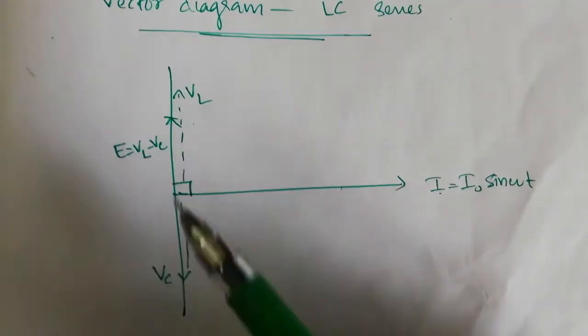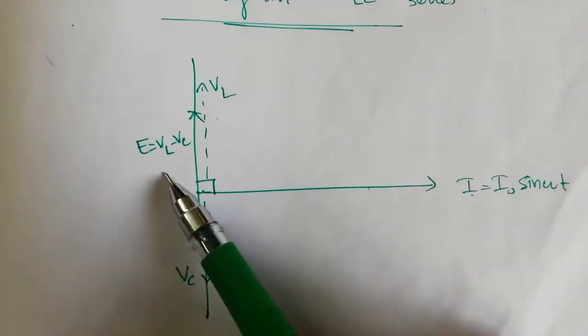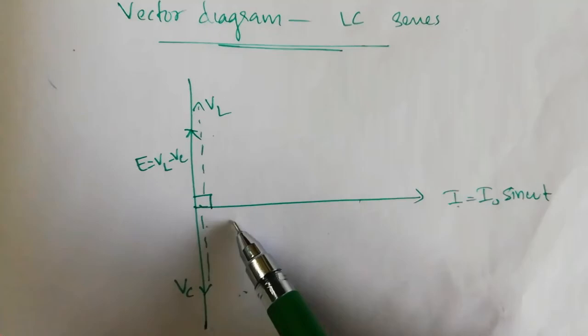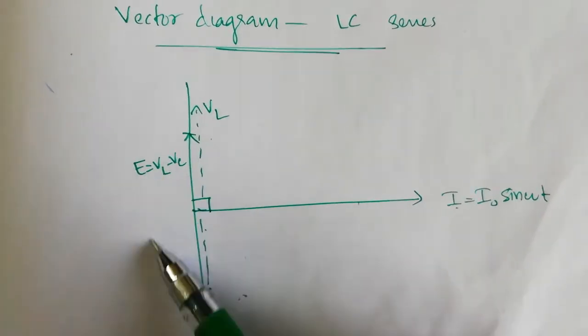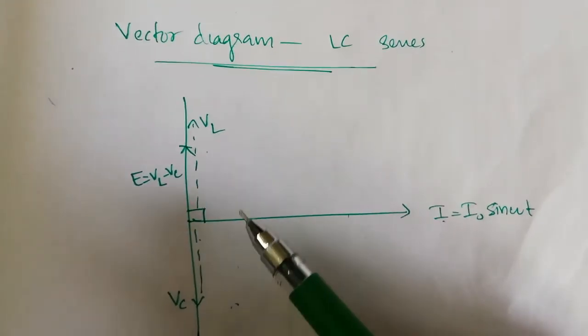So VL and VC will be having 180 degree phase difference, and E will equal VL minus VC. This will be the vector diagram which is representing the phase difference or the representation of an LC series AC circuit.